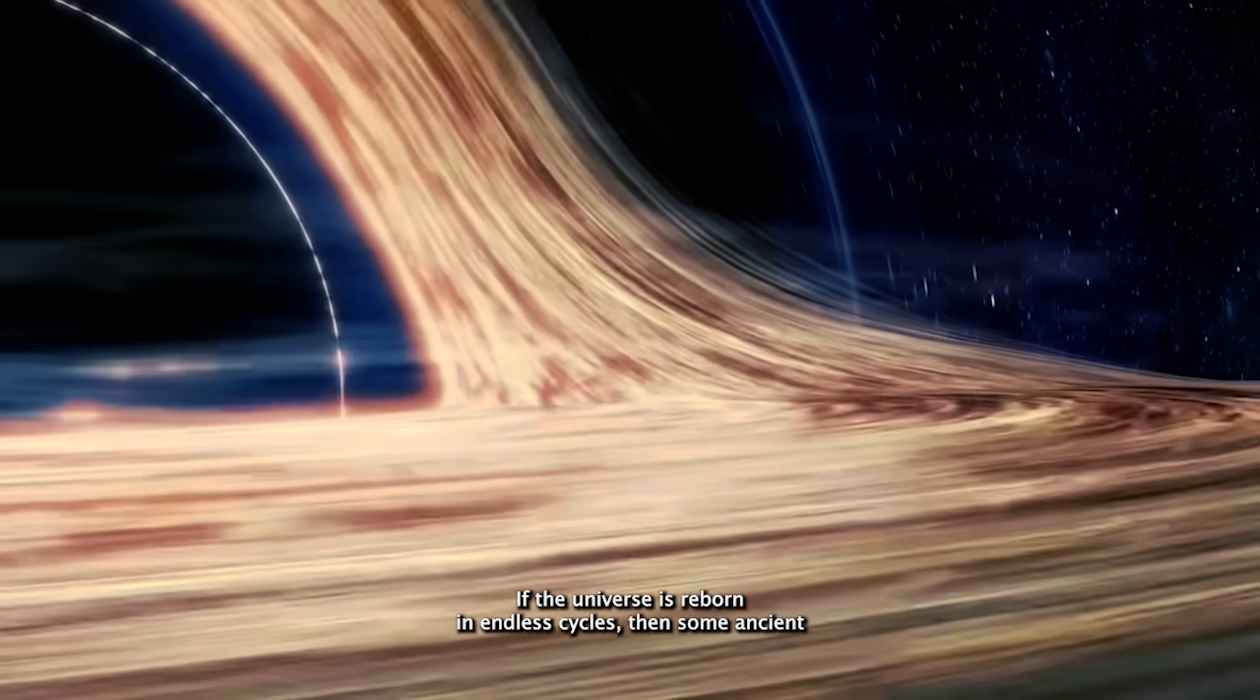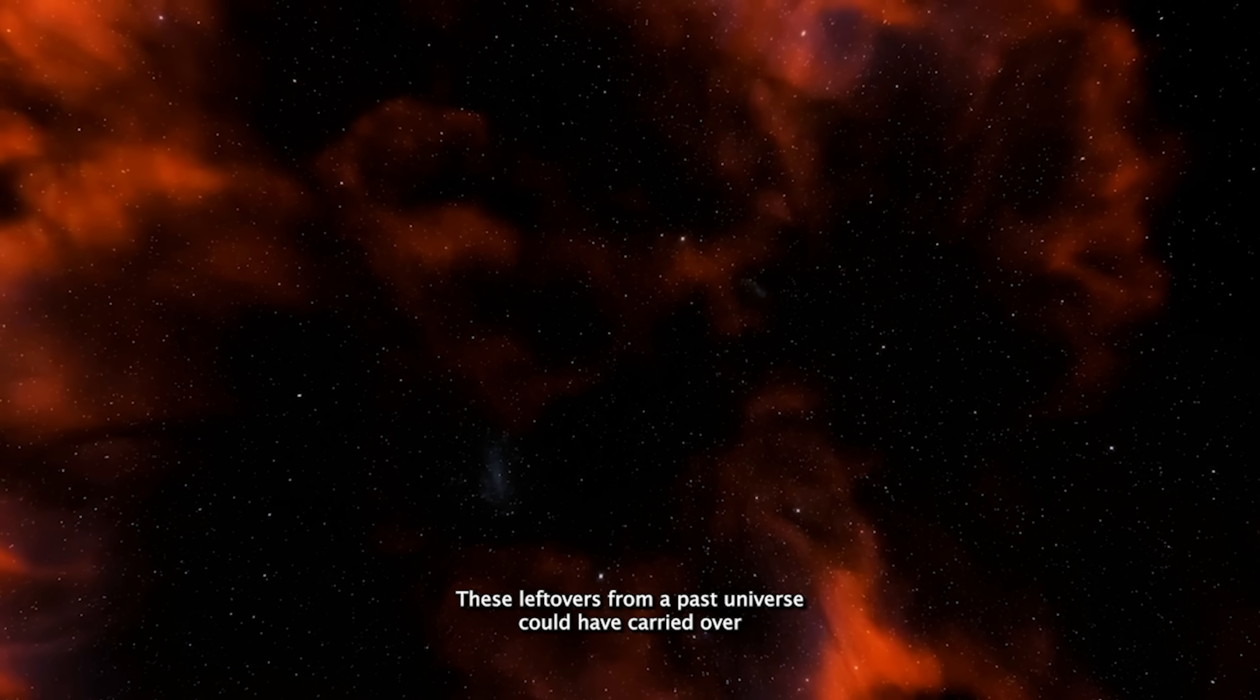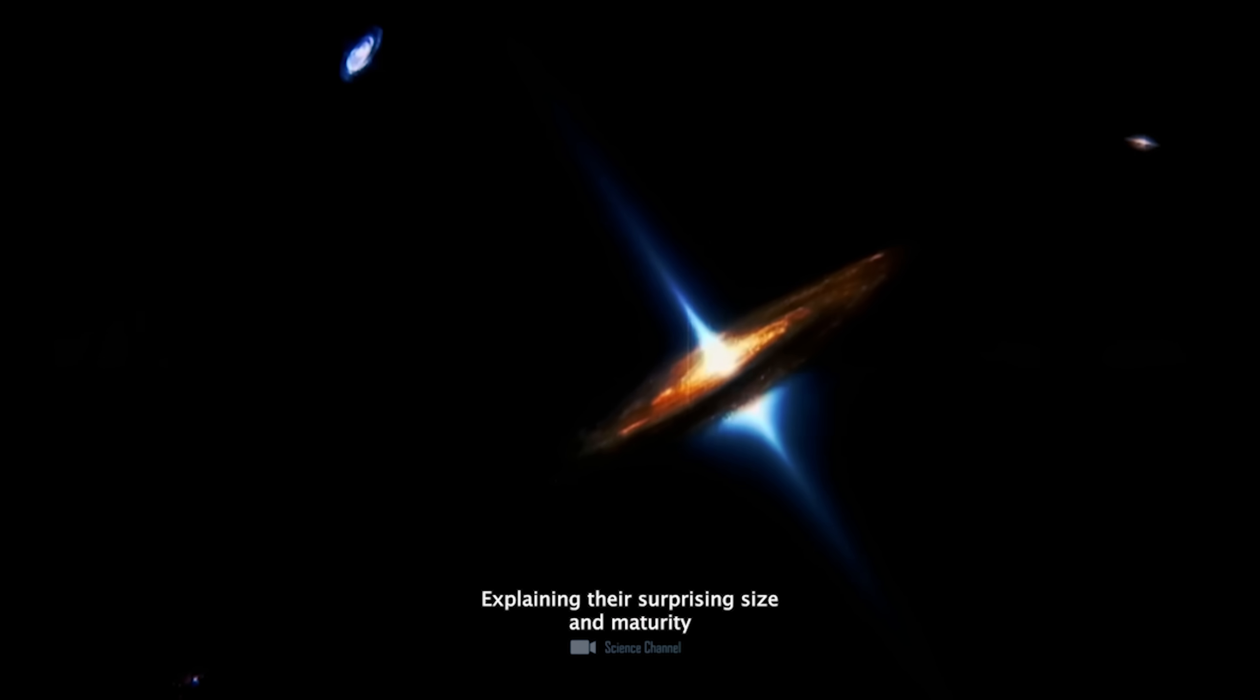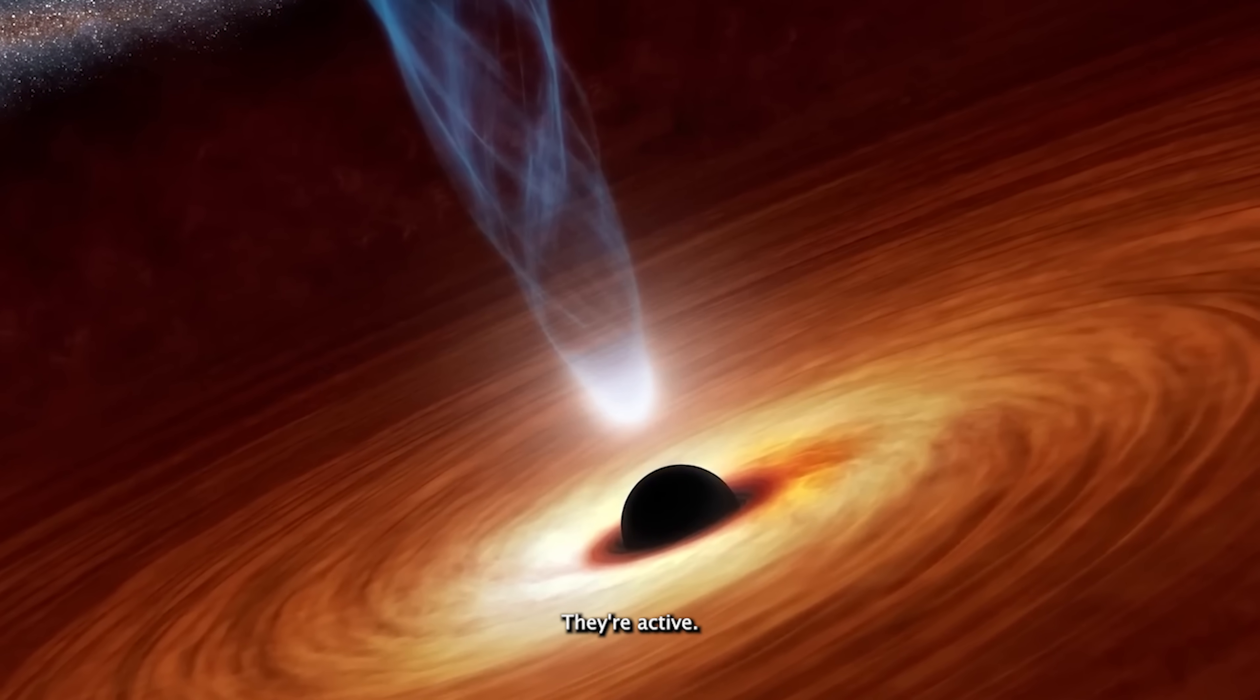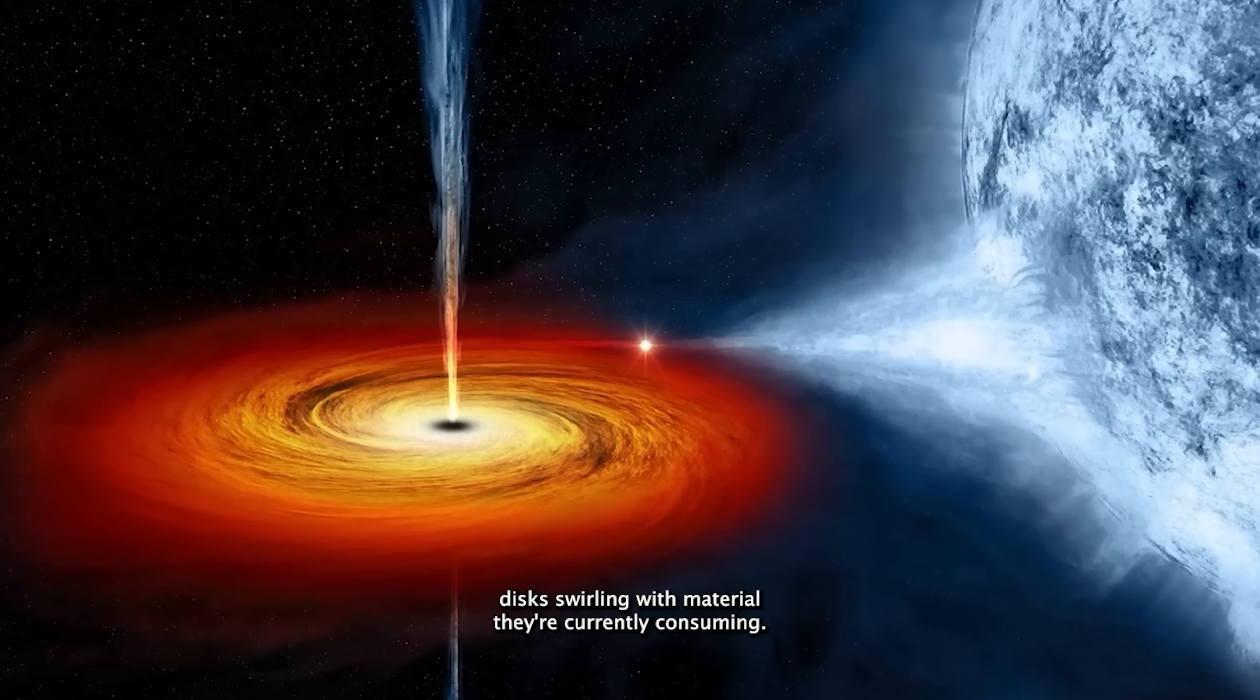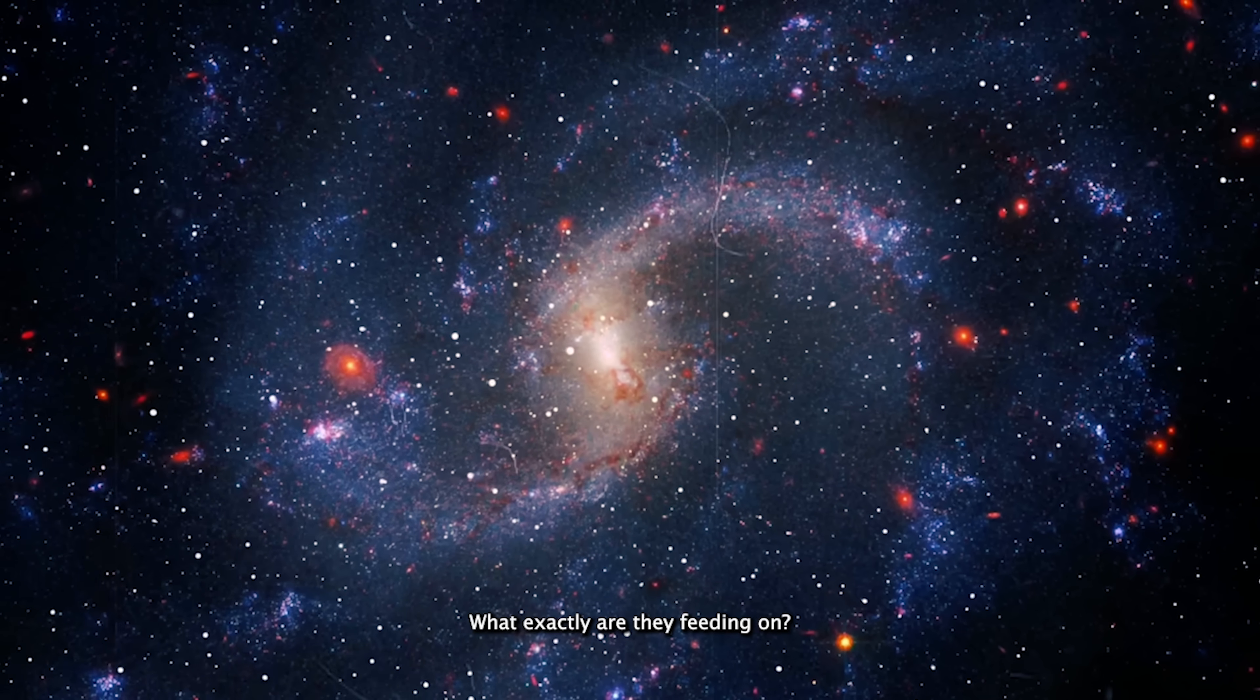If the universe is reborn in endless cycles, then some ancient black holes may have survived the death of a previous cosmos. These leftovers from a past universe could have carried over into the next cycle, explaining their surprising size and maturity so early on. One intriguing sign. These black holes aren't just big. They're active. They have well-formed accretion disks swirling with material they're currently consuming. But in a newborn universe with so little matter, what exactly are they feeding on?